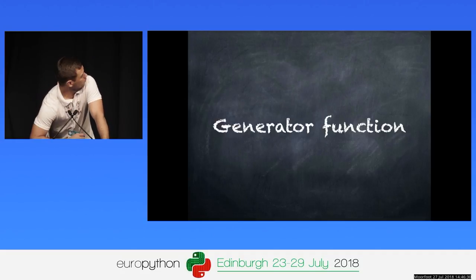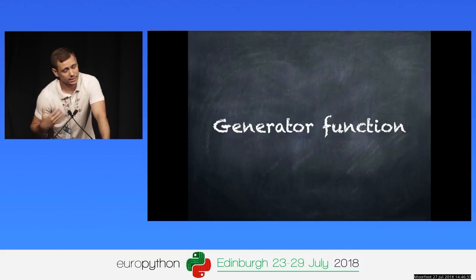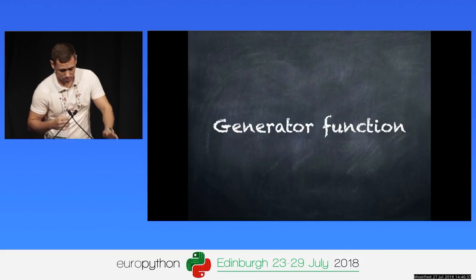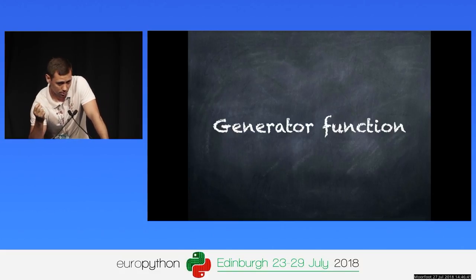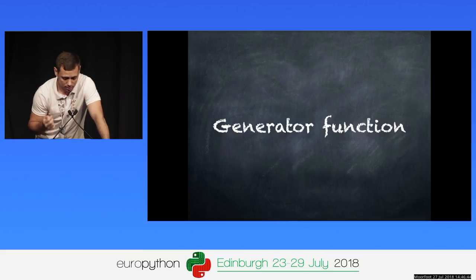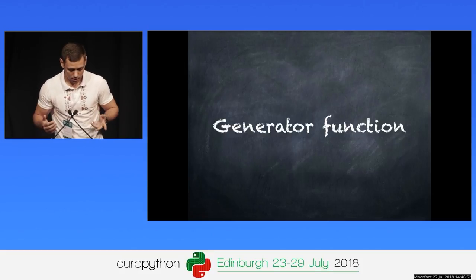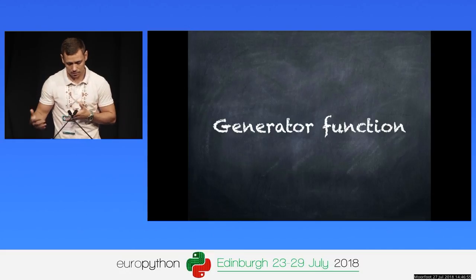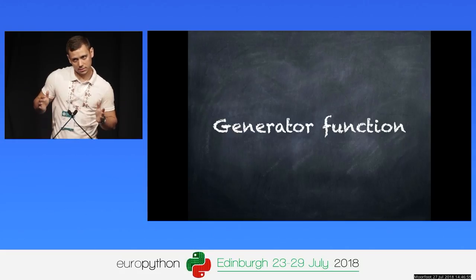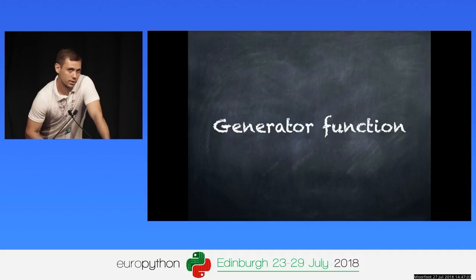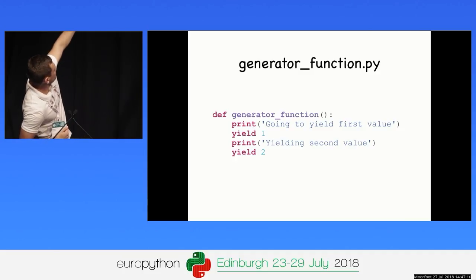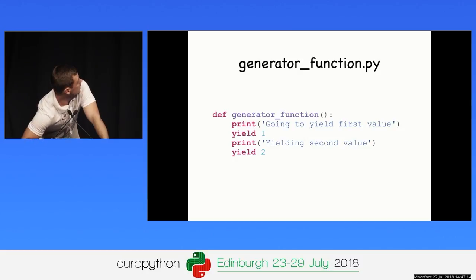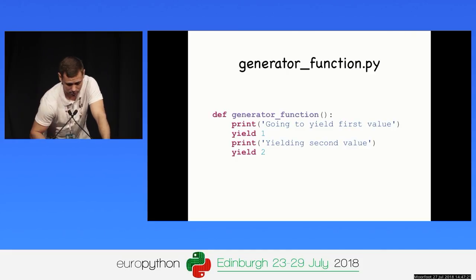Let's get back to the yield keyword. Let's talk about generator functions. If the body of a function contains yield, that function automatically becomes a generator function. Once we call the generator function, it returns a generator iterator. We can get values from the generator iterator by calling next on it, and once the generator is exhausted, it will raise StopIteration. You can consume the values of a generator only once. This is a normal function, but instead of returning, we return values by yielding them. Since the function has yield inside it, it is a generator function.